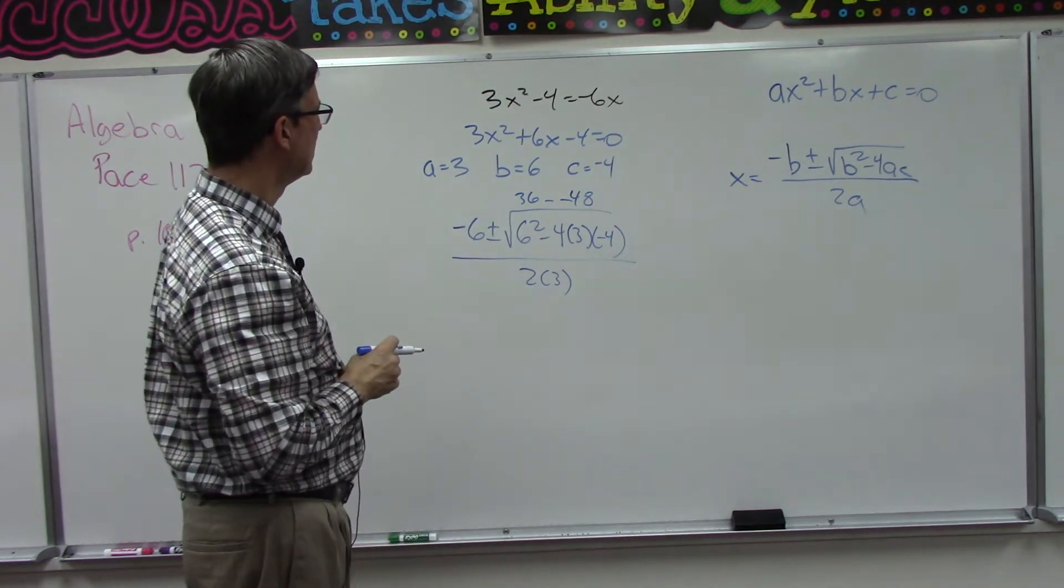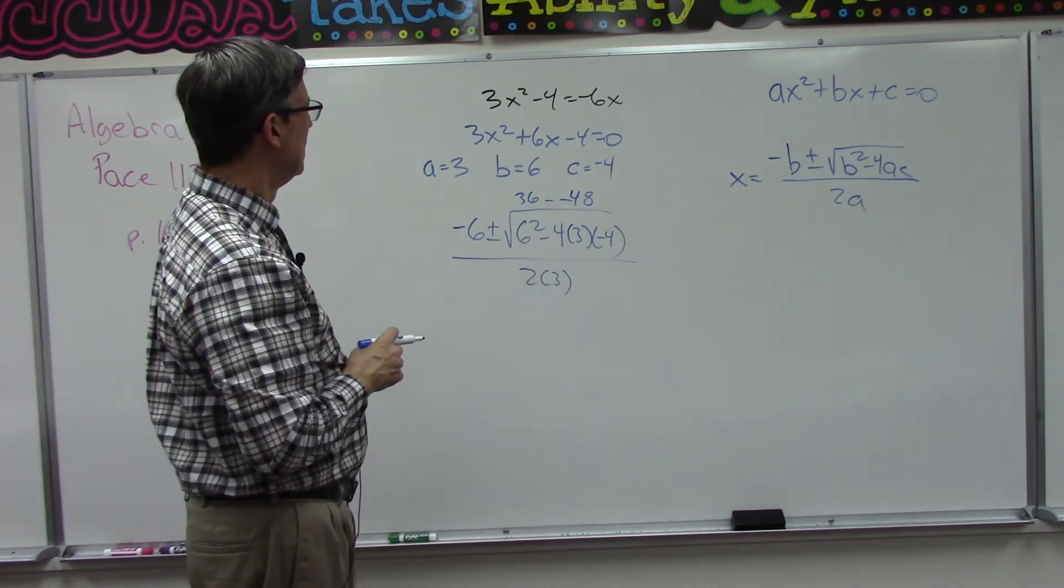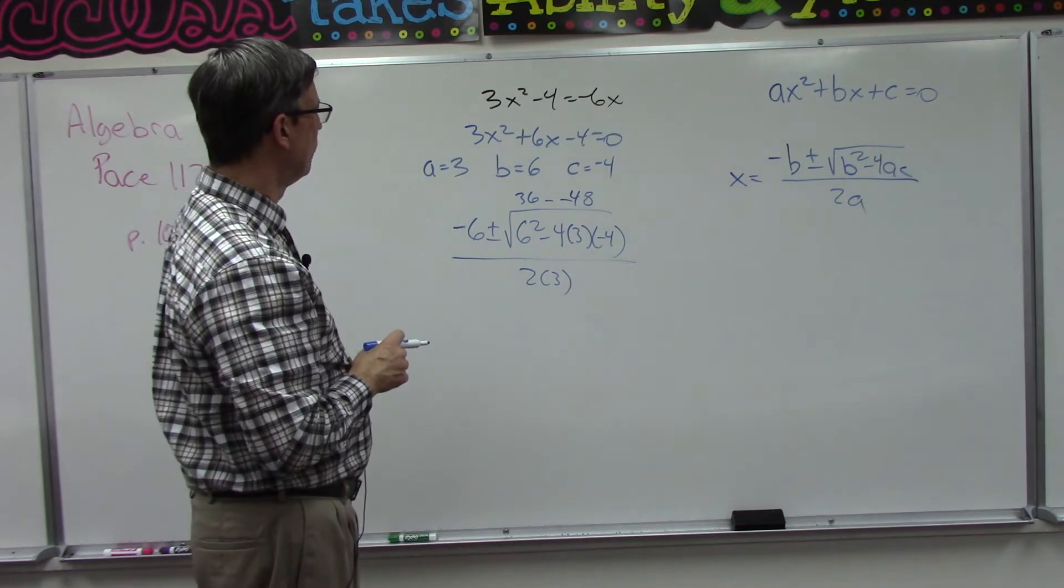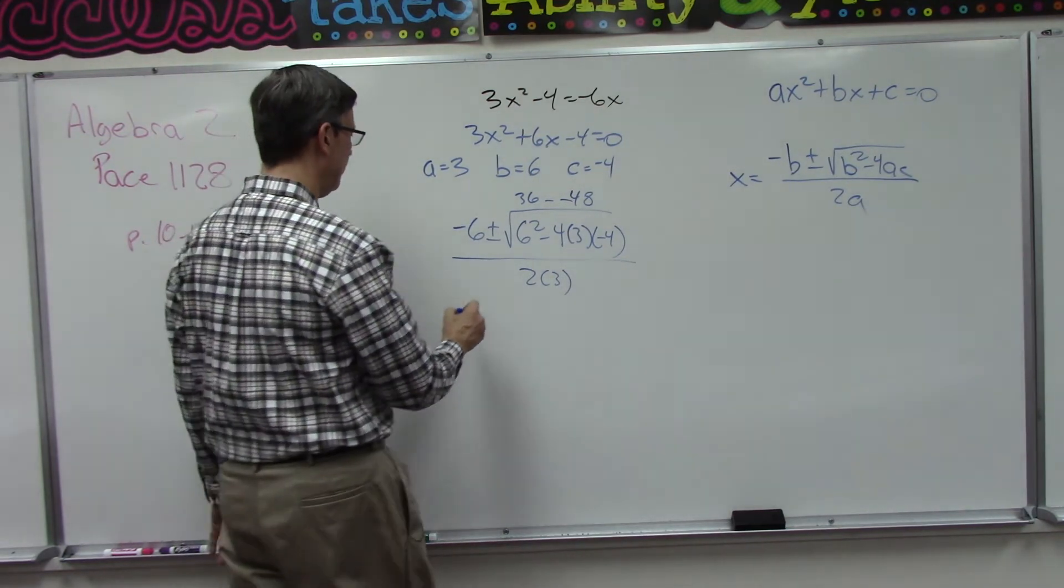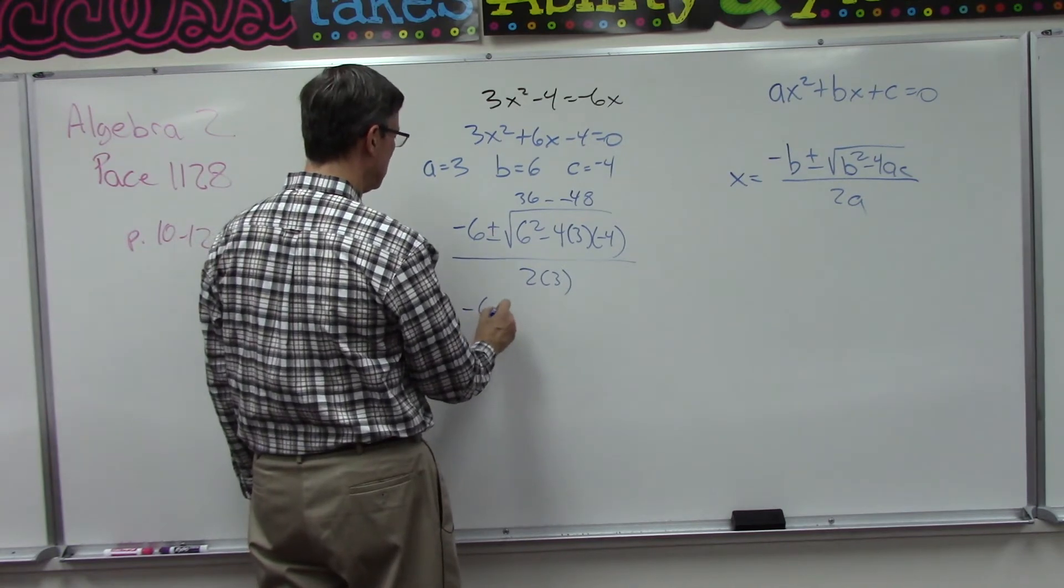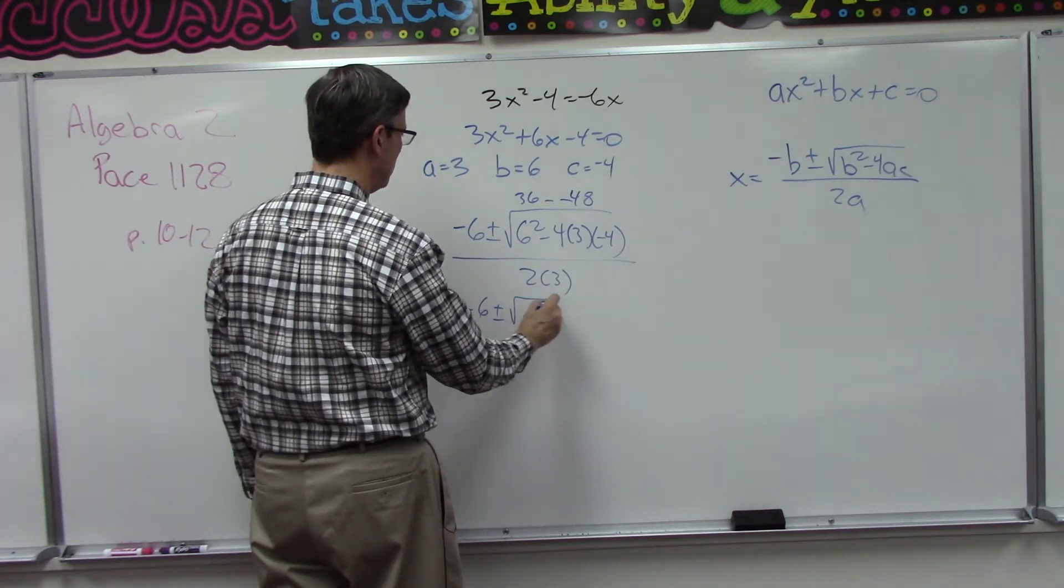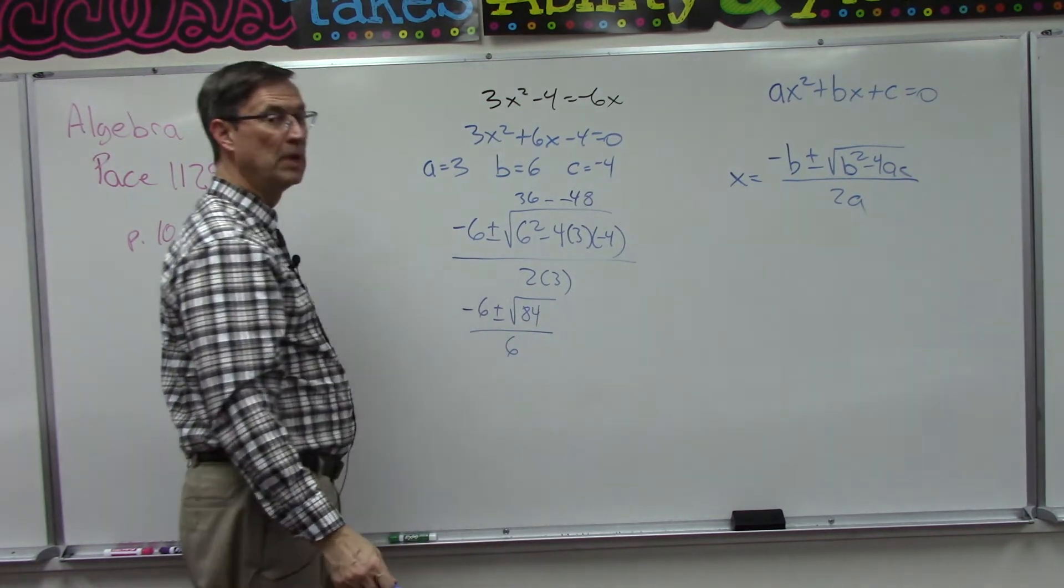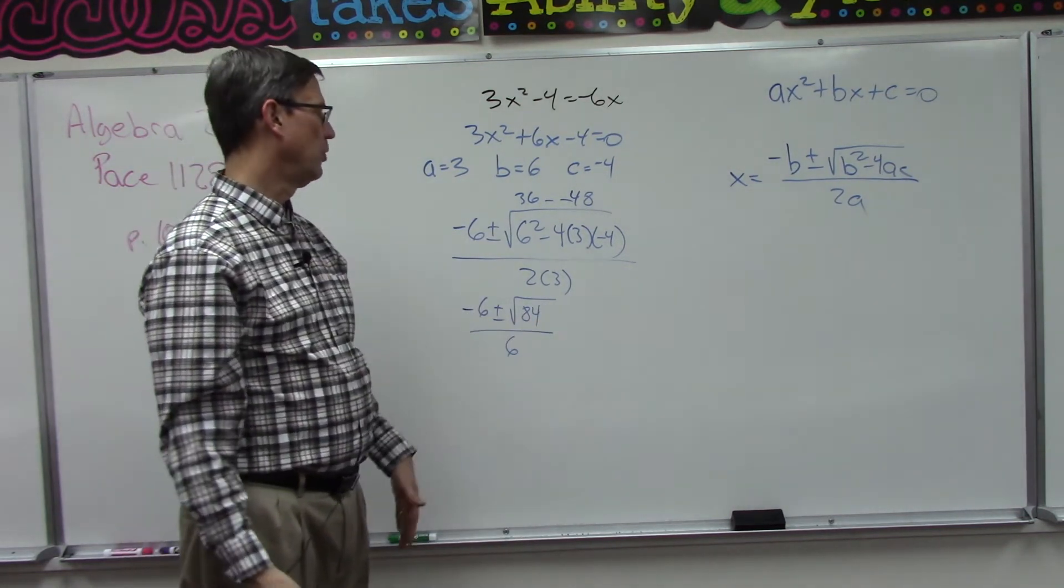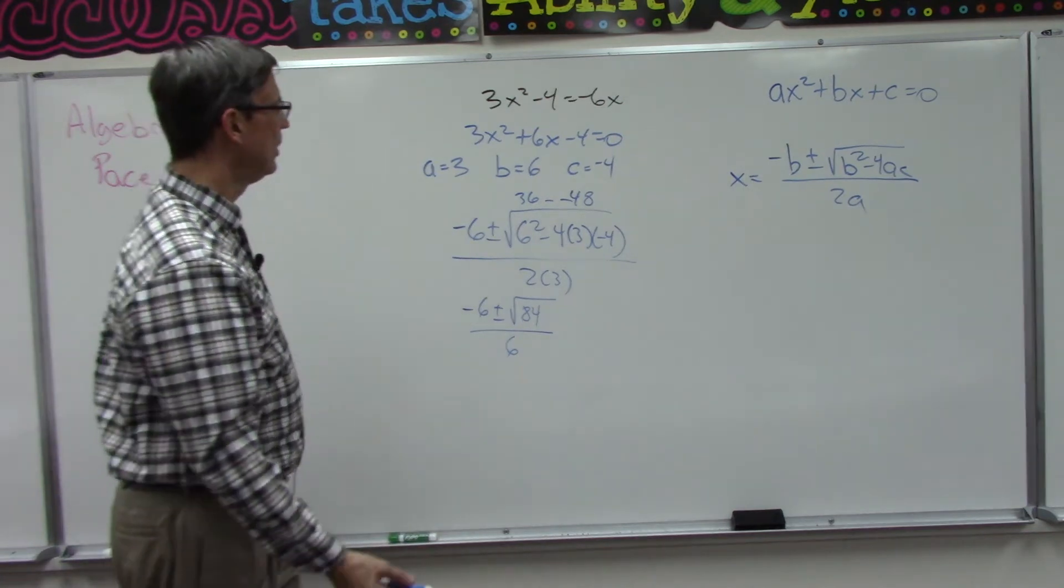Now notice that's a negative, and then this is 36 minus that. What does that give us? 14, carry the 1, 84. Okay, so negative 6 plus or minus the square root of 84 all over 6. And now we have to break down 84 because we don't know what the square root of 84 is.